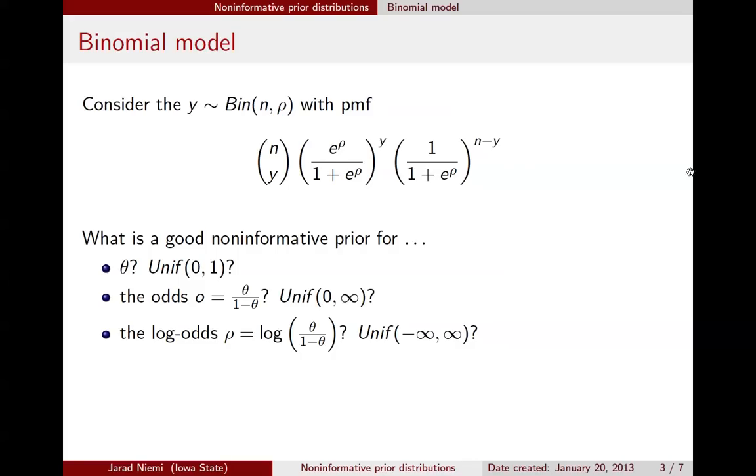So immediately, it should be clear that the latter two of these are not actually true density functions for our parameter. That is, they do not integrate to 1. We will introduce this in a moment, but that is called an improper prior. In contrast, this prior here for the success probability is, in fact, proper.